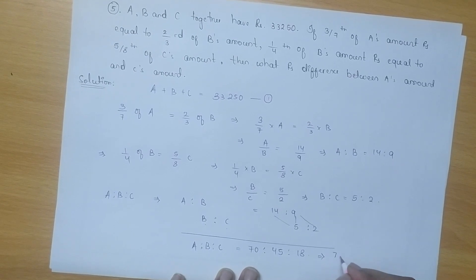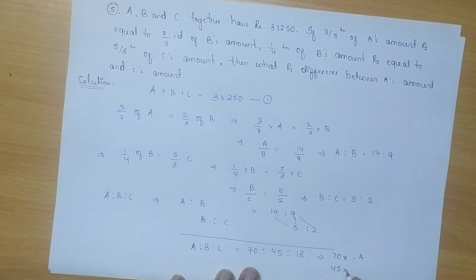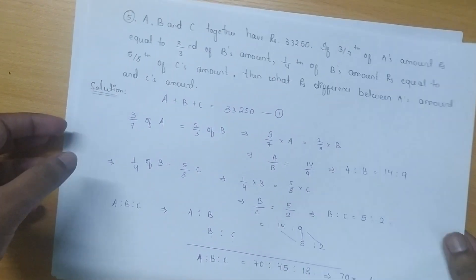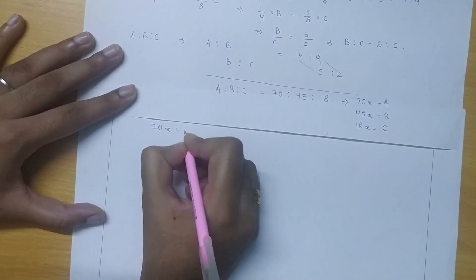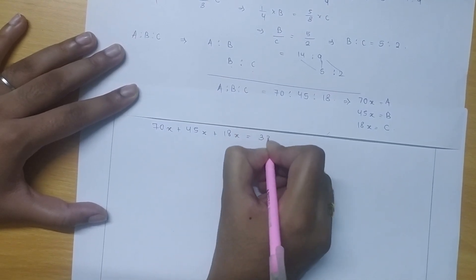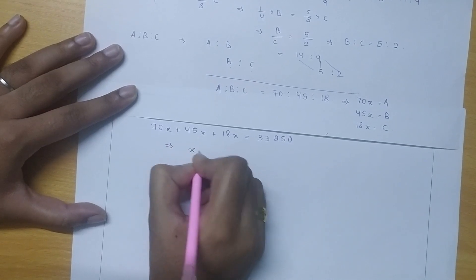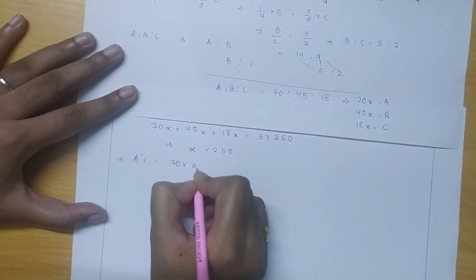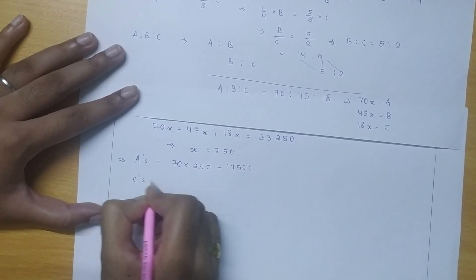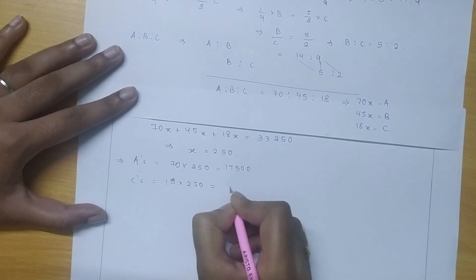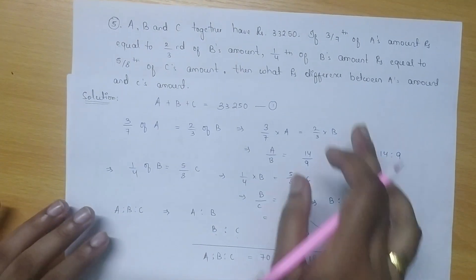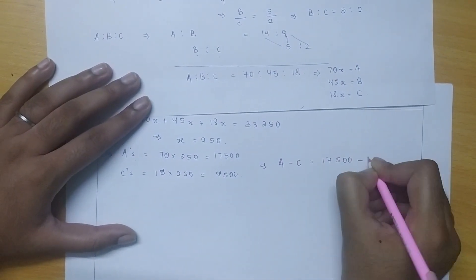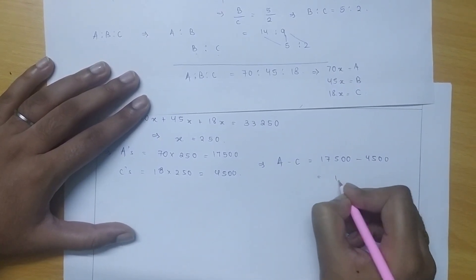Thus A's share will be 70x, B's share will be 45x, and C's share will be 18x. To find the value of x, using the first equation: 70x plus 45x plus 18x equals 33,250. On solving, x equals 250 rupees. Substituting, A's share is 70 multiplied by 250, which is 17,500, and C's share is 18 multiplied by 250, which is 4,500 rupees. The difference between A and C's amount is 17,500 minus 4,500, which equals 13,000.